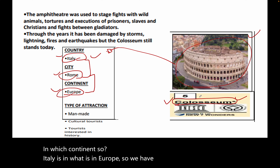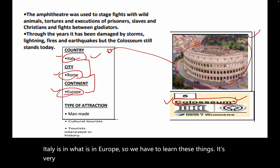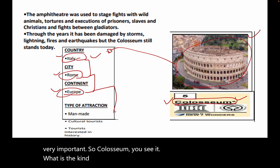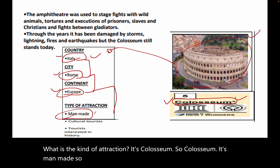We need to link these things — it's very important. Looking at the Colosseum, what kind of attraction is it? The Colosseum is man-made, meaning it's something that was made with human involvement.